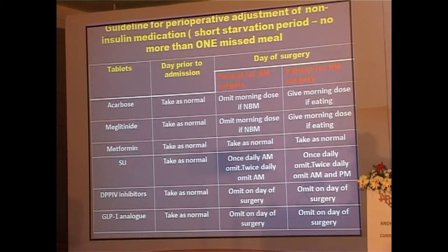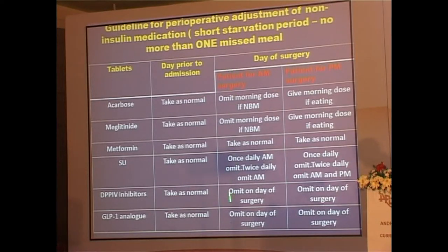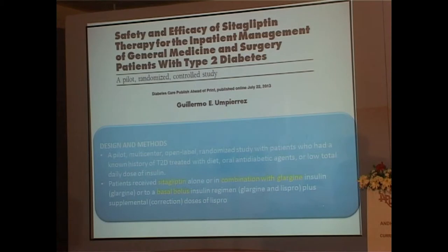For oral agents on the day prior to admission — acarbose, meglitinides, metformin, sulfonylureas, gliptins, GLP-1 analogs — for simple surgery with short starvation and not missing more than one meal, the tablet can usually be taken. For AM surgery, omit the morning dose if the patient is nil by mouth. Metformin depends on creatinine clearance; secretagogues may be omitted a day prior or on the day of surgery.